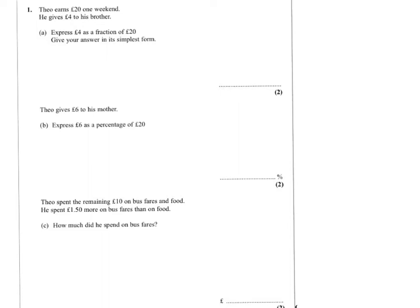Question 1, part a: we need to express £4 as a fraction of £20. So we write down 4 over 20, and we know that 4 goes into 20 five times, so if I divide by 4 I get 1 over 5. So my final answer is one-fifth.